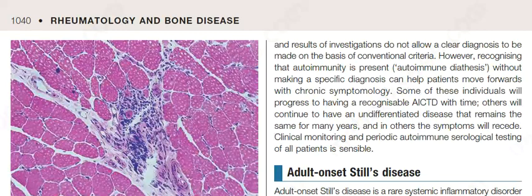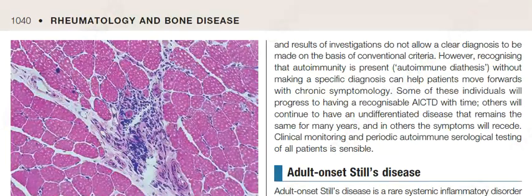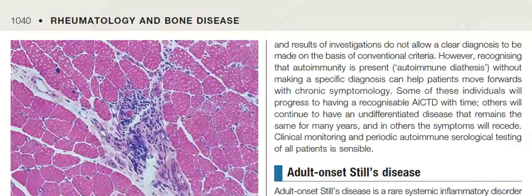However, recognizing that autoimmunity is present — an autoimmune diathesis — without making a specific diagnosis can help patients move forwards with chronic symptomology. Some of these individuals will progress to having a recognizable autoimmune connective tissue disease with time; others will continue to have an undifferentiated disease for many years; and in others the symptoms will recede. Clinical monitoring and periodic autoimmune serological testing of all patients is sensible.